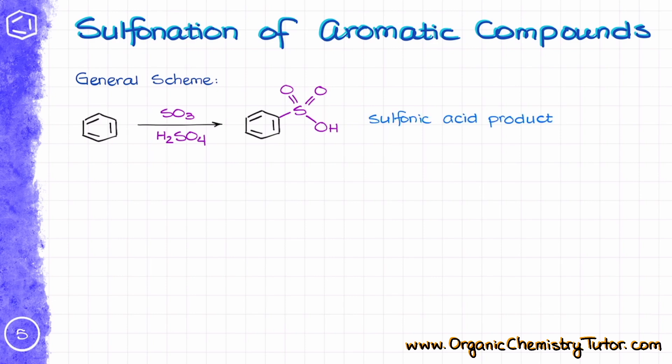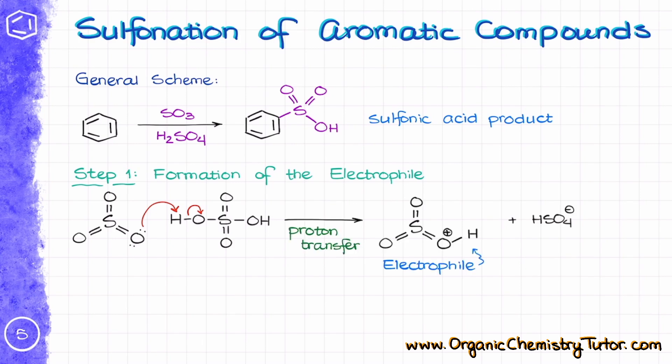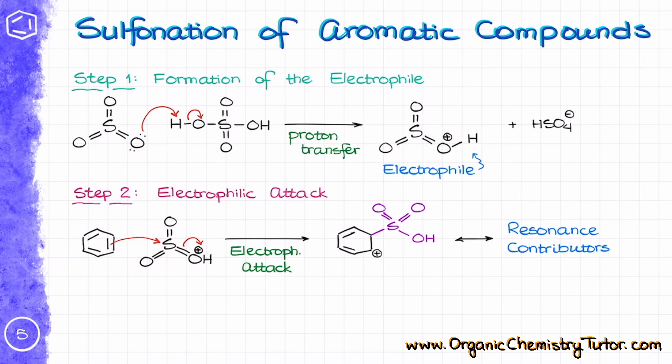This mixture is a thick, viscous, yellow-brown liquid, and because of its consistency and appearance it is sometimes called oleum. The reaction results in a sulfonic acid, and interestingly there are no co-products in this reaction — so don't accidentally draw water or anything as a co-product, because there are none. As always, we start the mechanism with electrophile formation: the protonation of SO3 by sulfuric acid.